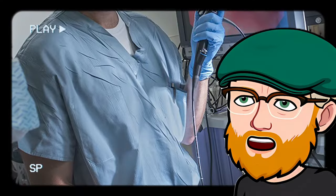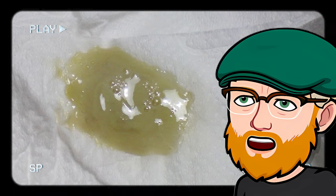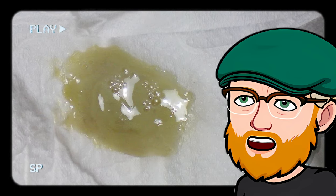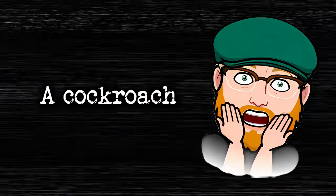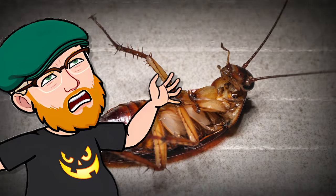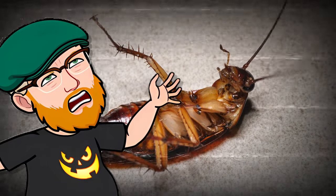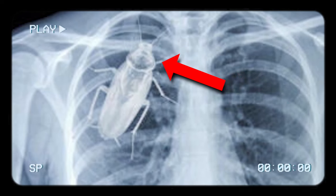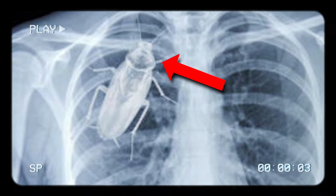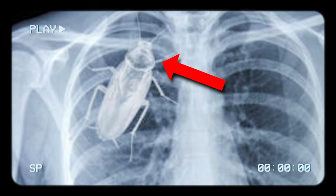After a lot of suctioning, out came a phlegmy blob that could rival any child's slime collection. The culprit was revealed. A cockroach. Yep, a real-life, crawling, crunchy cockroach, just hanging out, living its best life rent-free in the roach motel that doubled as this man's trachea.